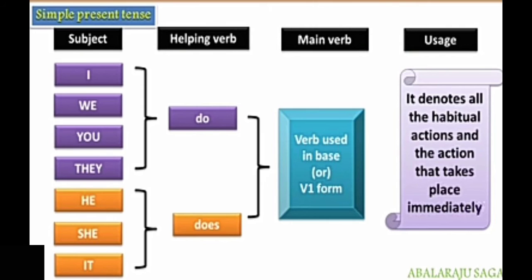V1 form is used — verb used in base or V1 form. The usage of this tense: it denotes all the habitual actions and the action that takes place immediately. This format is used to refer to habitual actions — habitual actions means the actions which take place regularly. The sun rises in the east, that action takes place everyday. The cow gives milk. My father works in army. We can say I read story books. These are regular activities expressed in simple present tense.